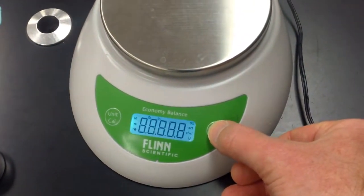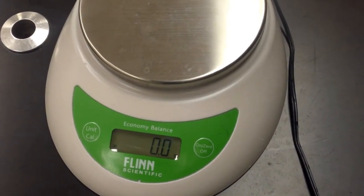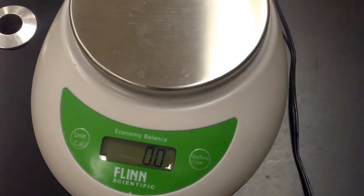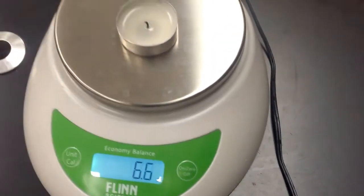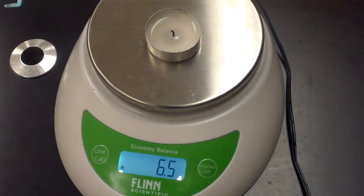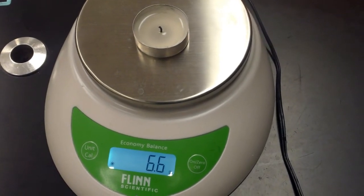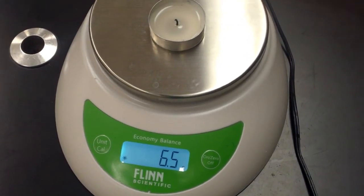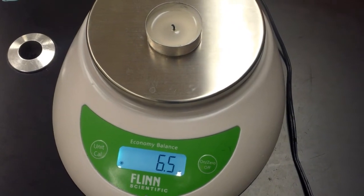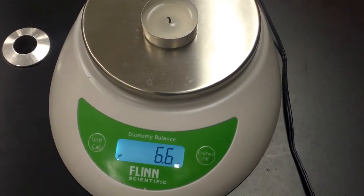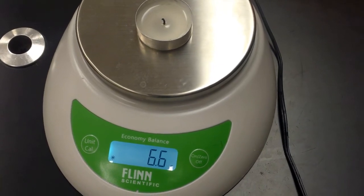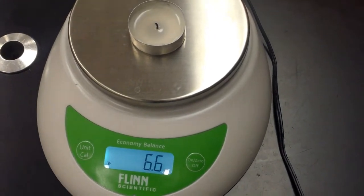Let's turn on the balance. Just make sure it's properly zeroed. And we'll measure the mass of our candle. Okay, the candle is now measuring 6.6, 6.5, 6.6. We'll record that as 6.6 grams.